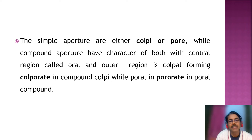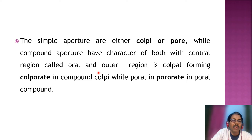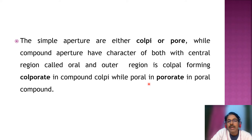Simple apertures are called colpus or pore, while there are also compound apertures which have characters of both — the colpus with a central region called oral and outer region called colpal, forming a colporate type. Colporate means there is a pore in the central region and a colpus in the outer region, forming a compound colpus type. Porate means there is a pore within a pore — one large pore and another smaller pore — so that is called pororate.